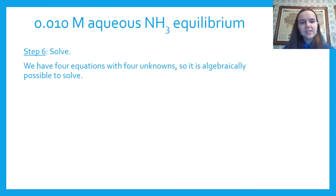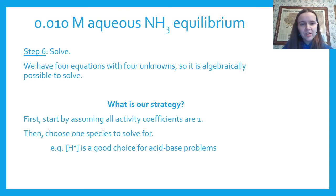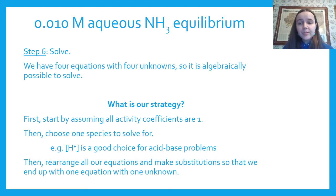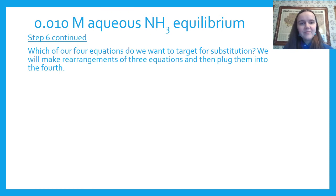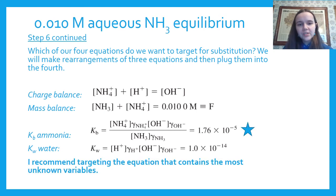Step 5: we have four unknowns and four equations — charge balance, mass balance, Kb for ammonia, and Kw for water. Step 6: solve. Strategy — first set activity coefficients to one. Pick H⁺ concentration as the variable to solve for. Rearrange all other equations to express other unknowns in terms of H⁺, then substitute into Kb — the equation with the most variables — to get one equation with one unknown. Use a table to track which equation is used for which species: Kw gives OH⁻; charge balance gives NH₄⁺; mass balance gives NH₃; all substituted into Kb.